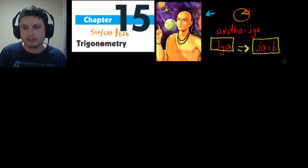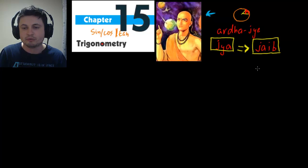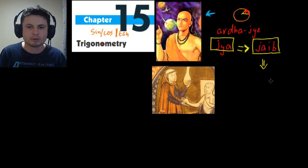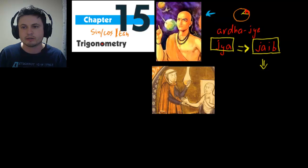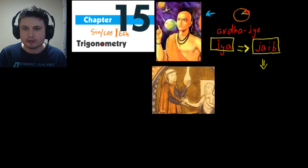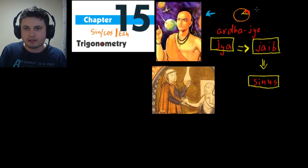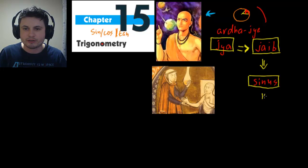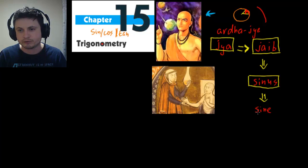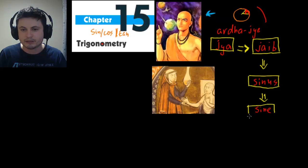Even more centuries later, a Latin translator decided to translate this concept into the language he understood. This is Gerard of Cremona, who lived in Spain and was a well-known translator of Arabic texts into Latin. He translated 'Jaib' into the Latin word 'sinus,' meaning curve — just like the idea of a bay. Over time, 'sinus' became 'sine,' basically a lazy way of saying it, and today it's written as 'sin' on your calculator.